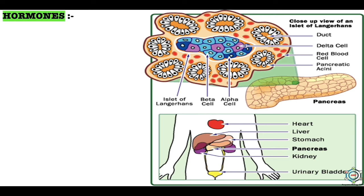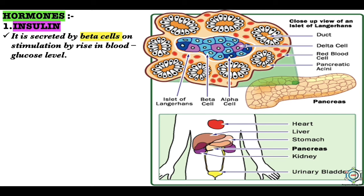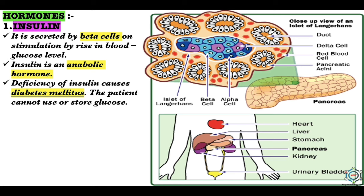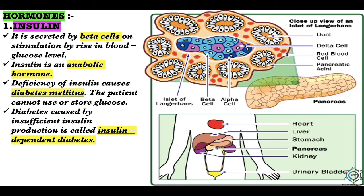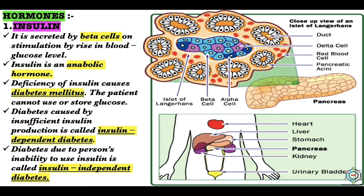The hormones of the pancreas include: first, insulin — secreted by the beta cells on stimulation by rise in blood glucose level. Insulin is an anabolic hormone. Deficiency of insulin causes diabetes mellitus, in which the patient cannot use or store glucose; glucose accumulates in the blood and is excreted in the urine. The diabetic person has blurred vision and is weak, tired, irritable, and underweight. Diabetes caused by insufficient insulin production is called insulin-dependent diabetes, while diabetes due to the person's inability to use insulin is called insulin-independent diabetes.